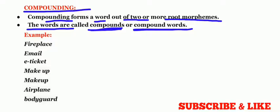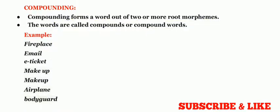So for example, fireplace. It is a combination of two words. First one is fire, the next one is place. But it became one here by compounding: fireplace. The same way email, e plus mail. Then e-ticket. Then makeup. Again makeup without space. Airplane. Bodyguard. So these words are the combination of two morphemes and that's why they are known as compounding words.